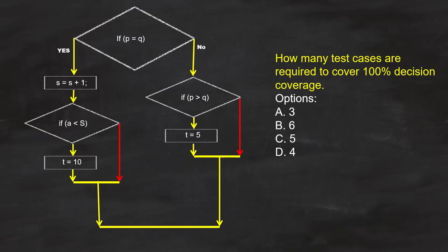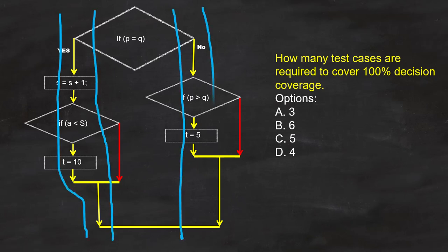Now let's analyze to get the correct answer. Here we have to find the number of test cases required to cover 100% decision coverage. And to do that we have to execute these 4 test cases. That means option D, 4 is the answer.